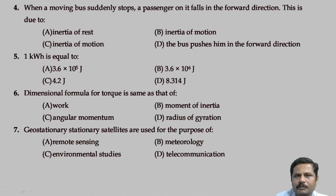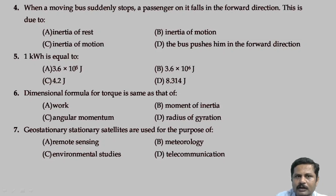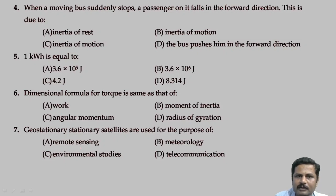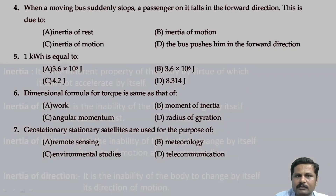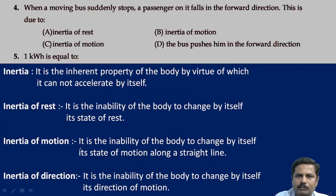When a moving bus suddenly stops, a passenger on it falls in the forward direction. This is due to inertia of motion. Here both options B and C refer to inertia of motion, so either B or C can be marked as correct. If the bus starts suddenly, then the body falls backward — that is due to inertia of rest. So for this question, we can write B as the right option or C as the right option, since both are correct.